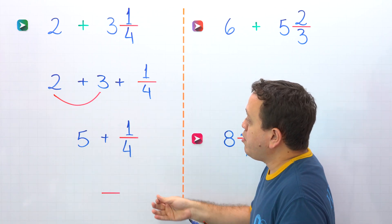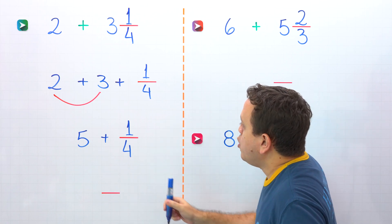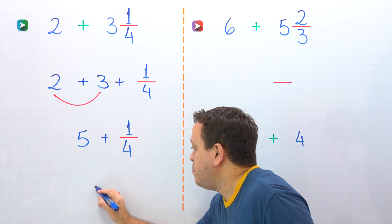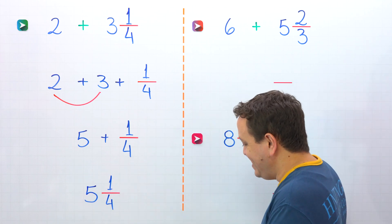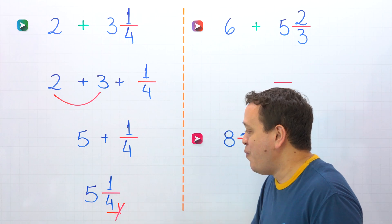So, we can rewrite this expression as a mixed number. We can rewrite the sum of 5 and 1 fourth as a mixed number 5 and 1 fourth. That's it! This is the answer. 5 and 1 fourth.